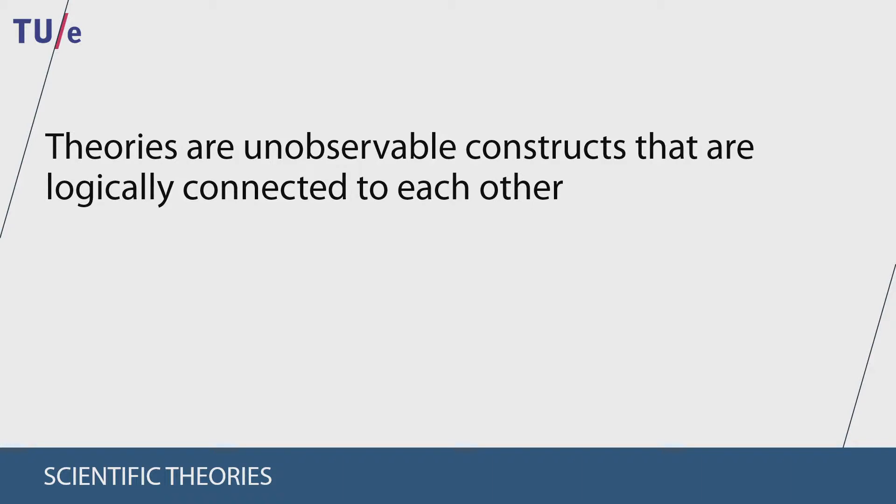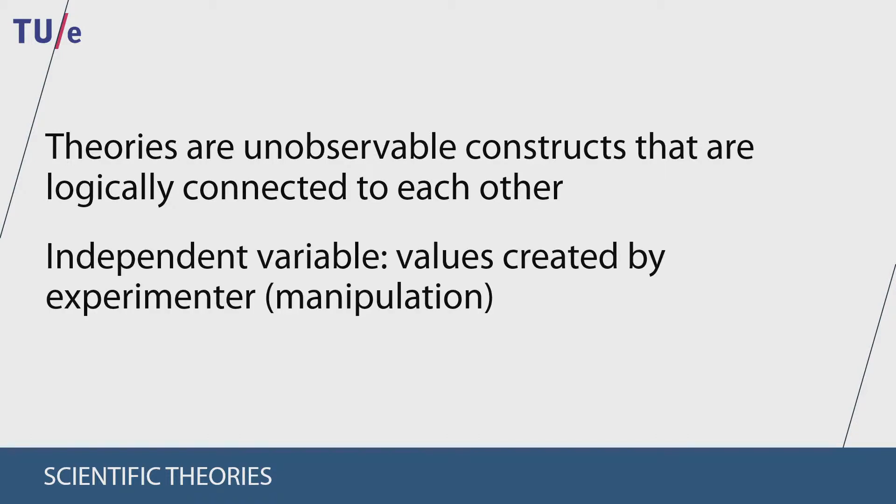These theories often contain multiple constructs or variables. These variables can be independent or dependent. An independent variable is an event of which the values are created by an experimenter and is often outside the control of test subjects.